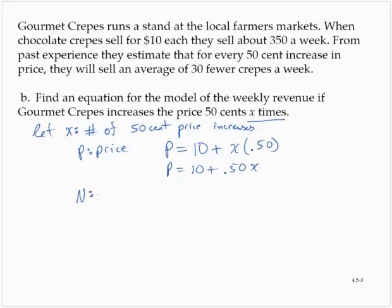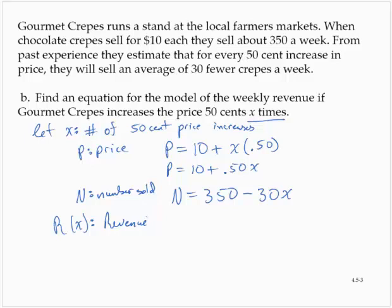Now if we say that n is the number sold, the number sold also depends on the number of increases. The number sold would be equal to the initial number — 350 per week — but that number decreases by 30 times the number of increases in price. So if R(x) is the revenue in dollars, then R(x) = (10 + 0.50x)(350 − 30x).